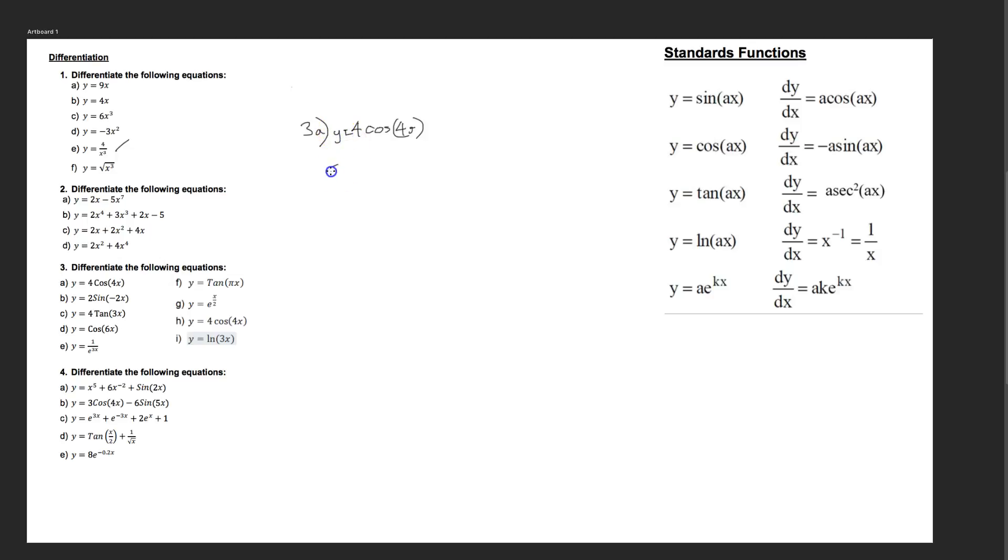So dy/dx, the differential of y with respect to x would be... we can see immediately that the power rule doesn't apply in its normal way. So we check our table of standard functions. It's cos ax, which will yield negative a, which in this case is 4. Negative 4 times the original 4, which is here. Sine ax, 4x.